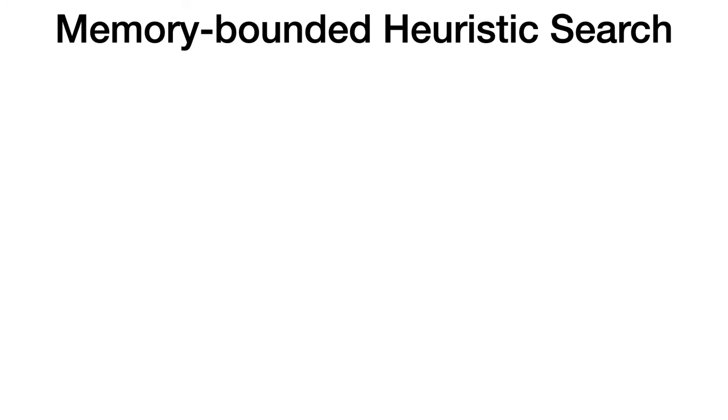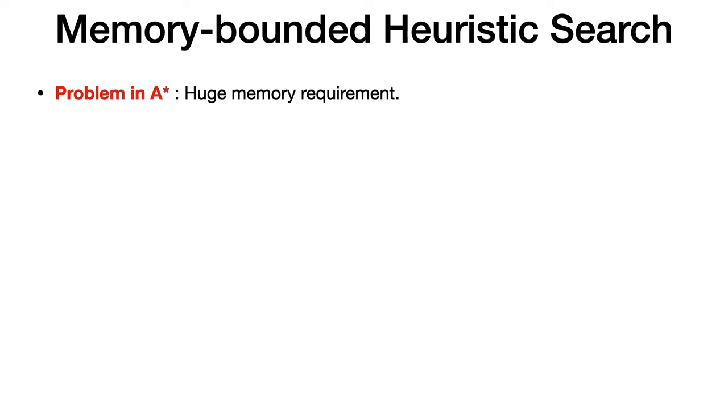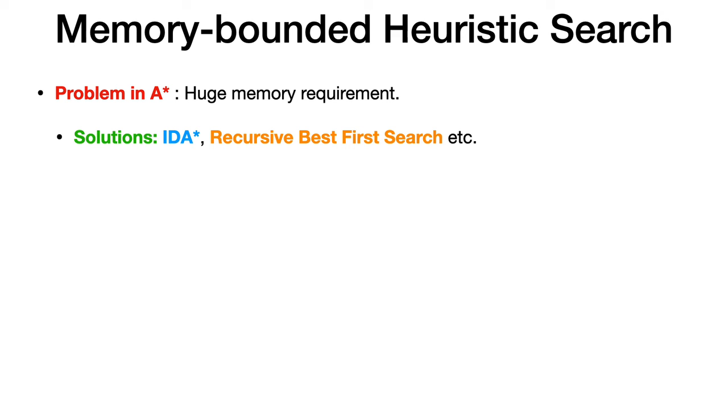In the previous video we discussed the A* algorithm, its advantages and disadvantages. One of the problems with A* is the huge memory requirement. To solve this, there are many memory-bounded heuristic search techniques, like the IDA* algorithm and recursive best-first search algorithm.